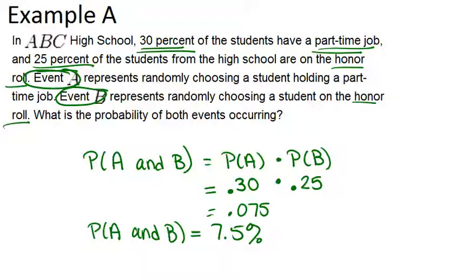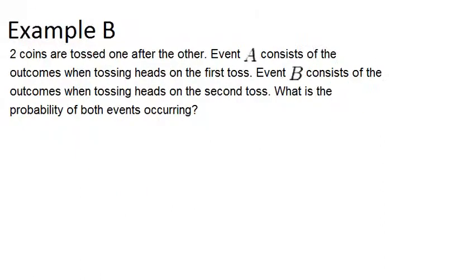Now let's look at example B. Two coins are tossed one after the other. Event A consists of the outcomes when tossing heads on the first toss. Event B consists of the outcomes when tossing heads on the second toss. What is the probability of both events occurring? When you're flipping two coins, those two events are definitely independent of one another — if you get heads on the first coin flip, it has no effect on whether or not you'll get heads on the second.